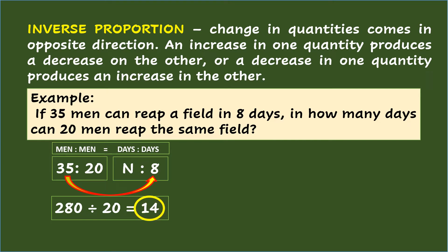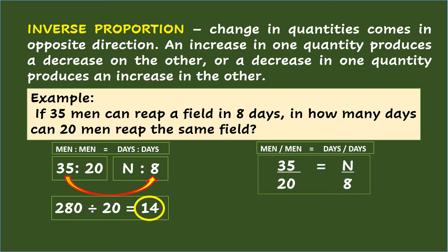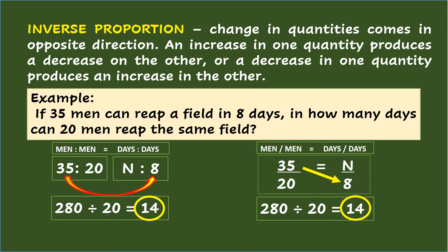So the final answer is 14 days. In fraction form, following again the order — men over men equals days over days — the inverse proportion will be 35 over 20 equals n over 8. Multiplying 35 times 8 equals 280. Dividing 280 by 20 equals 14. So the final answer is 14.